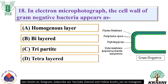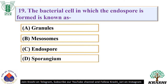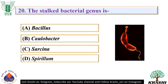In electron micrograph, the cell wall of gram-negative bacteria appears as — they appear as tripartite, that is three-layered. Question number 19: The bacterial cell in which the endospore is formed is known as sporangium. Question number 20: The stalked bacterial genus is. The correct answer is option B — Caulobacter. The stalks create thin extensions of the cell wall from the main cell body.